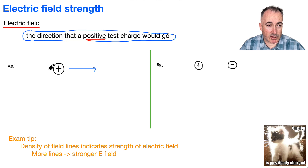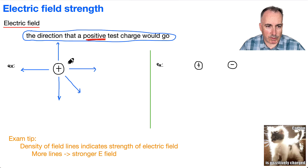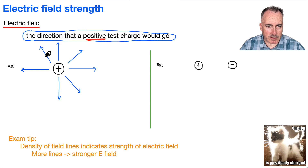And if I place it over here, where would it go? It wants to go out as well. So it goes radially outwards. These right here will be the electric field lines. I'll just be drawing these — E, E for electric field.